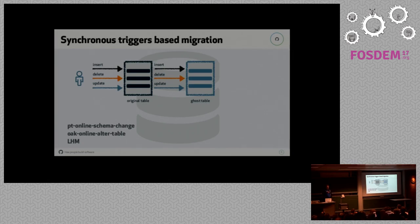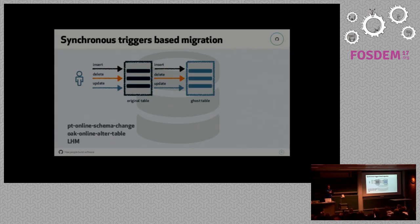This basically is how PT Online Schema Change works. You create a new table, you alter the new table, and then to get all the data changes applied to your new table, you put three triggers in place — a trigger for inserts, for deletes, and for updates. So all the things happening on the original table will also happen on your new table. And of course, it also needs to copy rows from the old table to the new table, because not all rows might be touched while the online schema change is running.